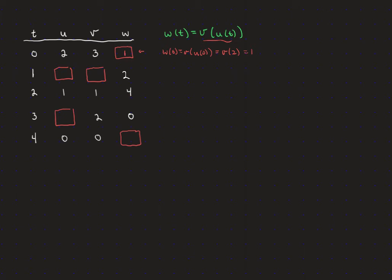For w(1), we know w(1) = v(u(1)) = 2. We don't know u(1) or v(1), but we ask: what input to v gives 2? Looking at the v column, v equals 2 when t = 3. So u(1) must equal 3.